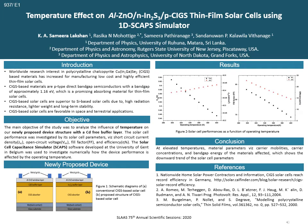Therefore, it is concluded that at elevated temperatures, material parameters such as carrier mobilities, carrier concentrations, and band gap energy of the materials are affected, which shows a downward trend in the solar cell parameters.